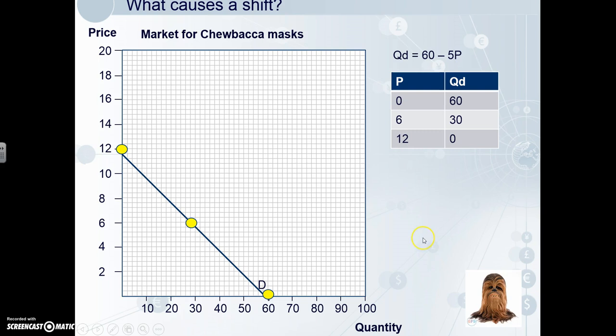Now we'll look at what a shift in demand looks like in the world of linear equations. An increase in demand for Chewbacca masks could happen due to him starring in a new movie, The Force Awakens — the variable A will change. Remember that an increase in demand is an increase in quantity demanded at any price level, including zero. So whereas 60 were demanded at zero before, if we change the equation to QD equals 80 minus 5P, there are now 80 demanded at zero. So we follow the steps from before and plot our points.